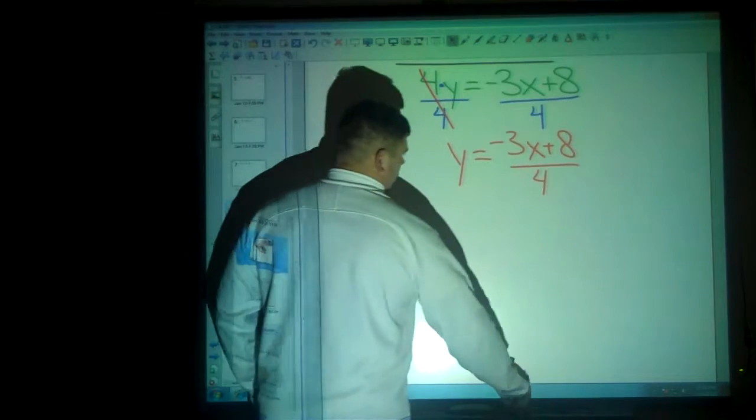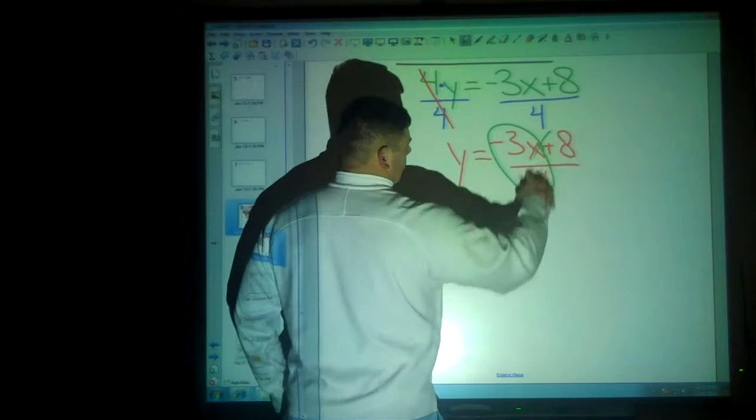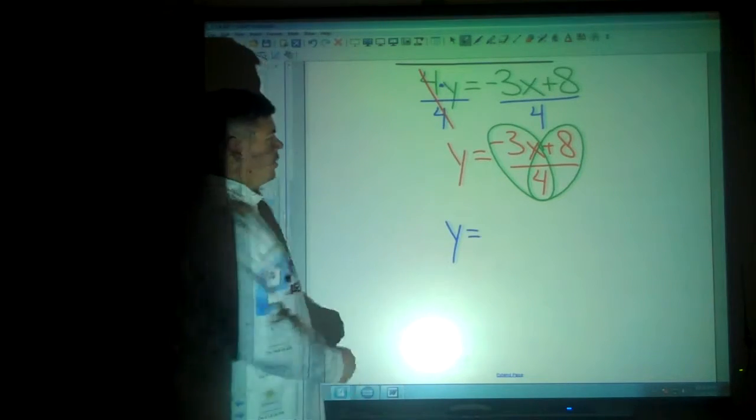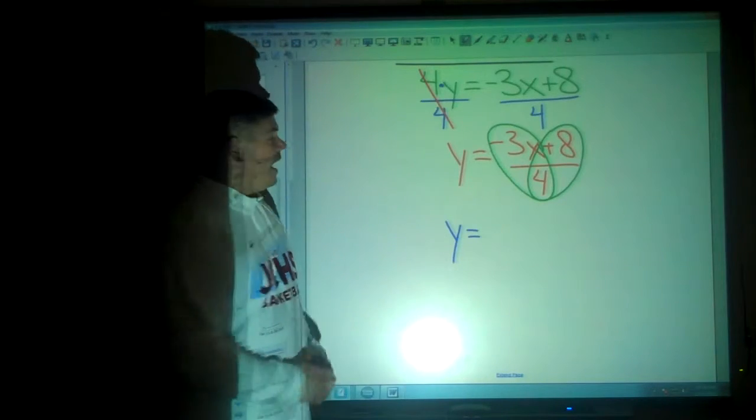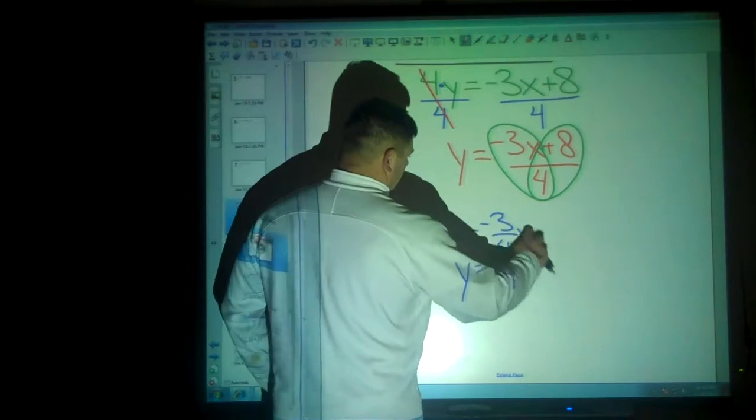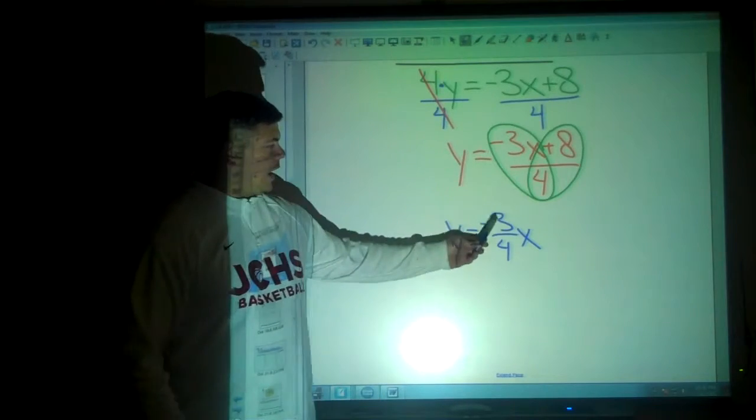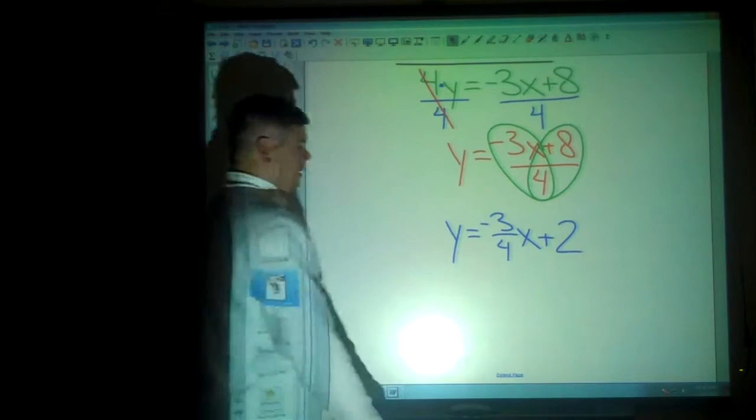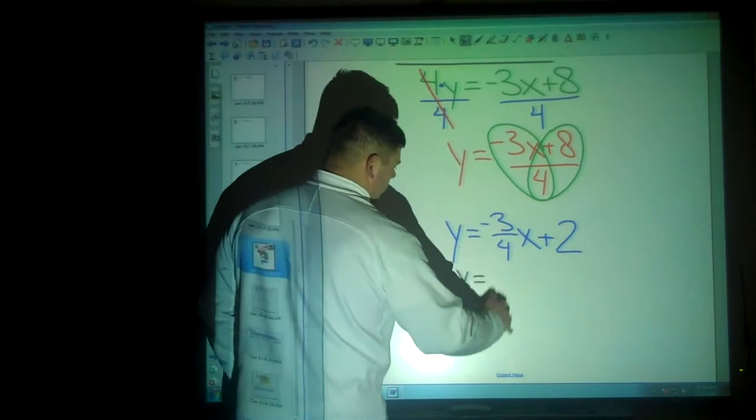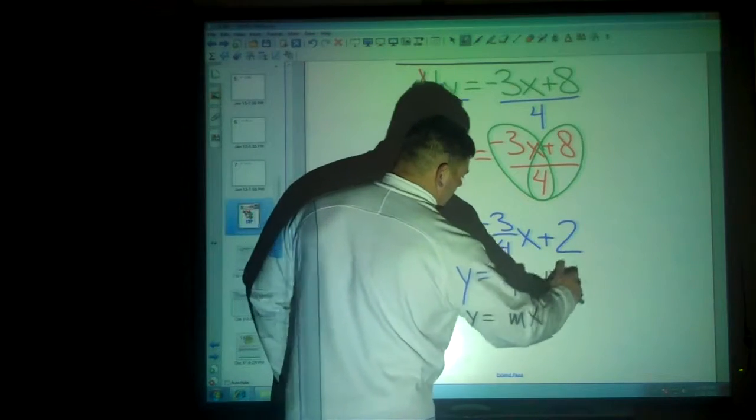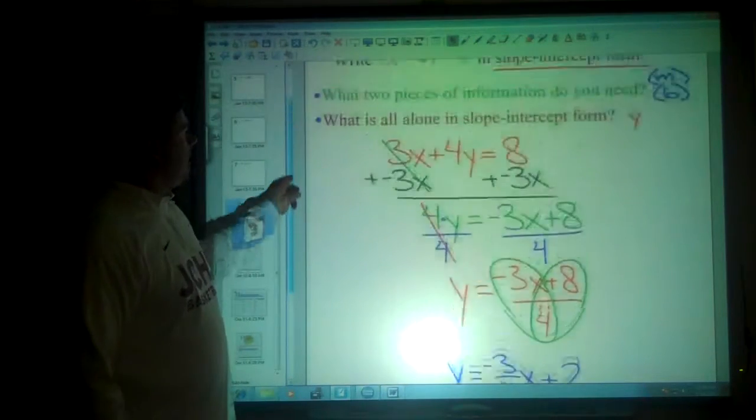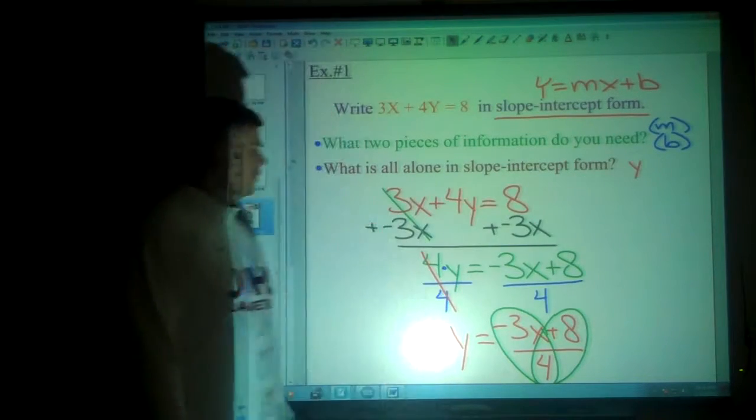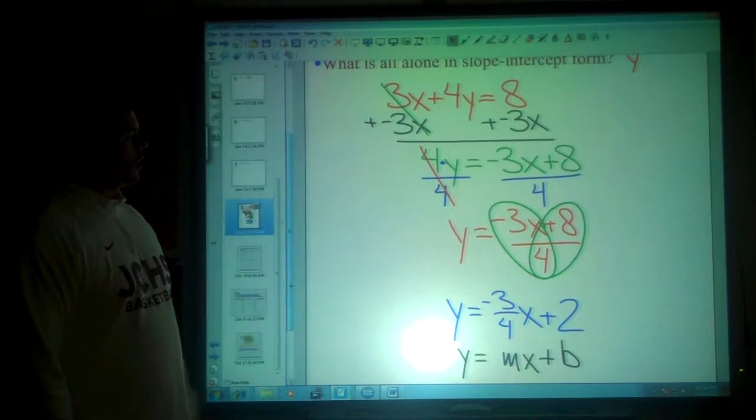So you can do this division and that division. You can't actually get a nice number from negative 3 divided by 4, but you get a fraction, which is very nice for slope. So rise over run, and 8 divided by 4 is 2. So there you have it, y equals mx plus b. The objective, any time you're asked to write something in slope-intercept form, will be to get the y alone. Play the shuffling game until you can get y alone.